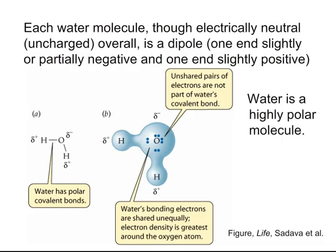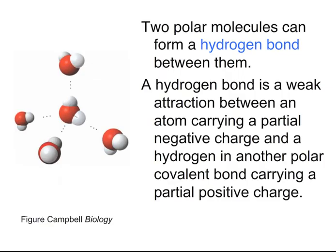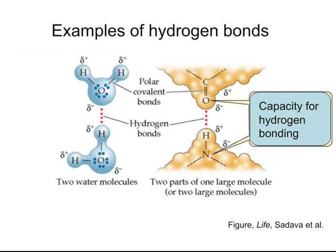H2O is not electrically charged — it's not an ion — but it is polar, and overall the molecule is a dipole. Each water molecule has one end that is slightly negative, a partial negative charge, and one end that is slightly positive, thus making it a dipole. A hydrogen bond can form between two different polar molecules, or between two different parts of the same large molecule.